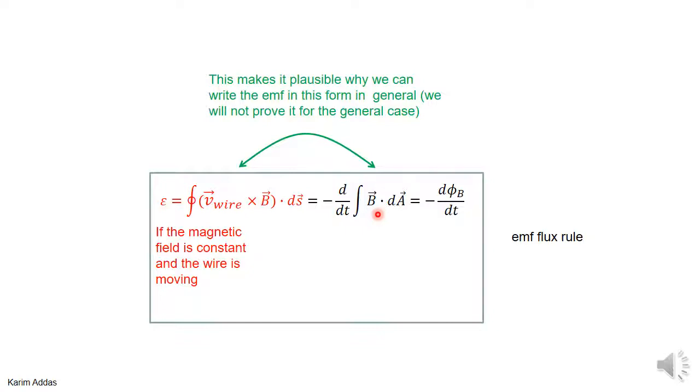So if the magnetic field is constant in time and it's not changing and the wires are moving, this is the emf and you can also write it the way we wrote it before as minus d phi by dt.